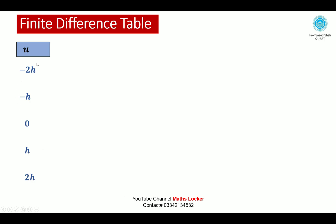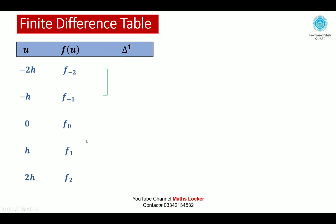Writing the values of u in the first column and the values of f(u) in the second column. Taking the first difference: f(−1) minus f(−2) gives delta f(−2).